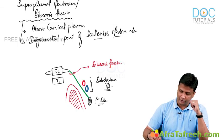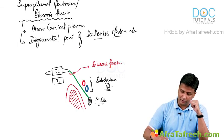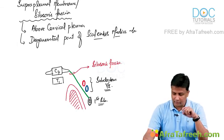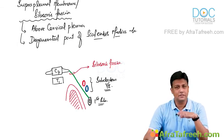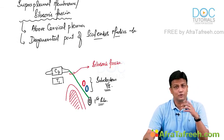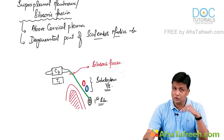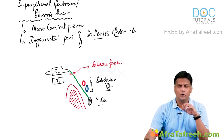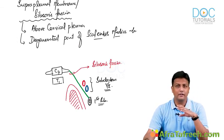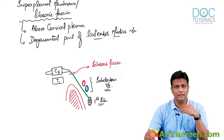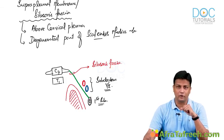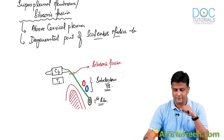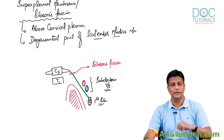After learning the entire pleura topic, remember Sibson's fascia — also known as the suprapleral membrane. Once we are done with all these introductory things in the lungs topic, we'll move on to other important topics in the lungs.